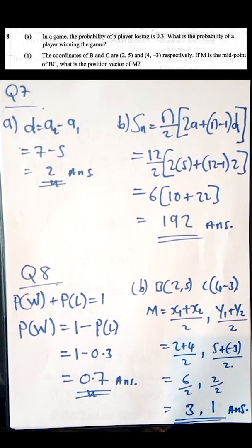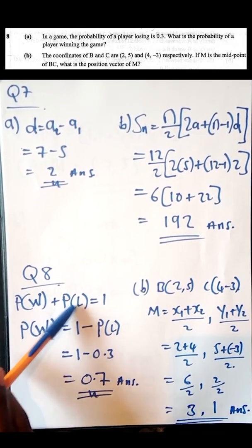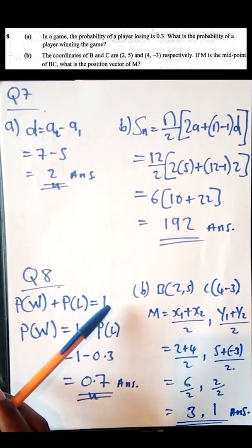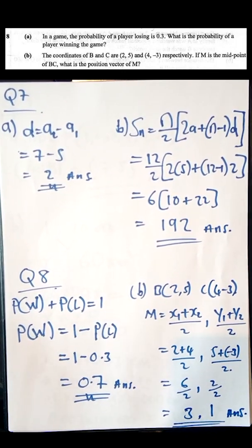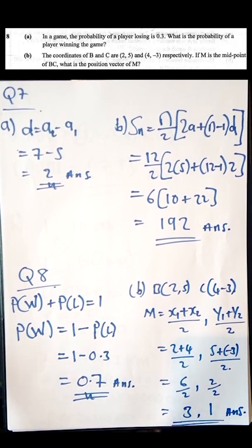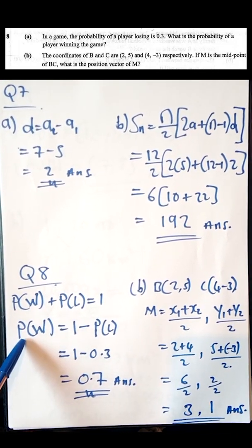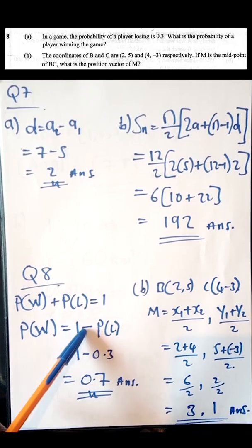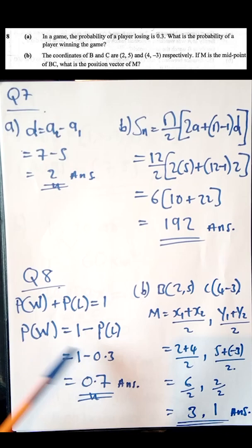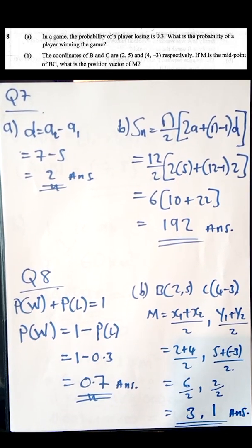We've been given two probabilities: probability of winning and probability of losing, and they must add up to one. The probability of losing is 0.3. So the probability of winning equals 1 minus the probability of losing: 1 minus 0.3 gives 0.7, which is the probability of winning.